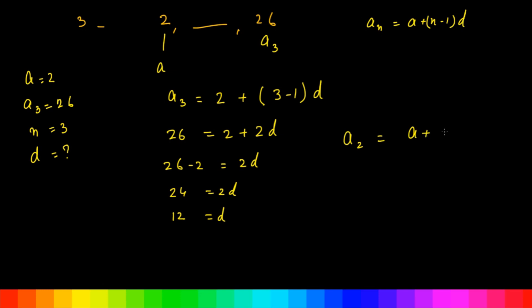The missing term is the second term. A2 = A + D. Here A is 2 and D is 12, so A2 = 2 + 12 = 14. The missing second term is 14.